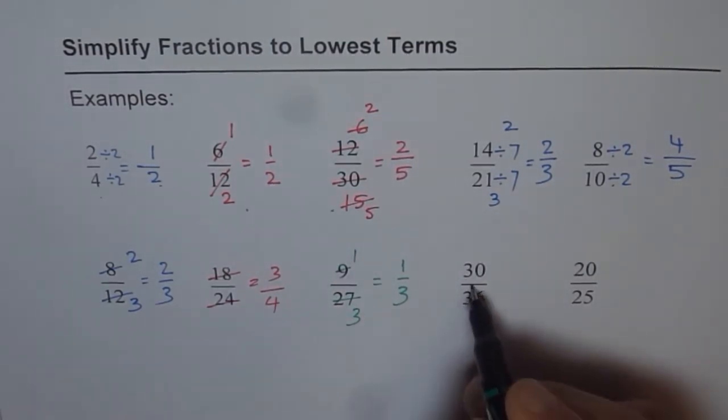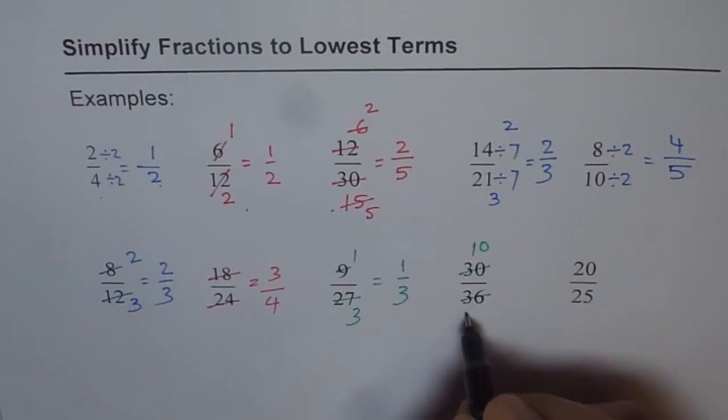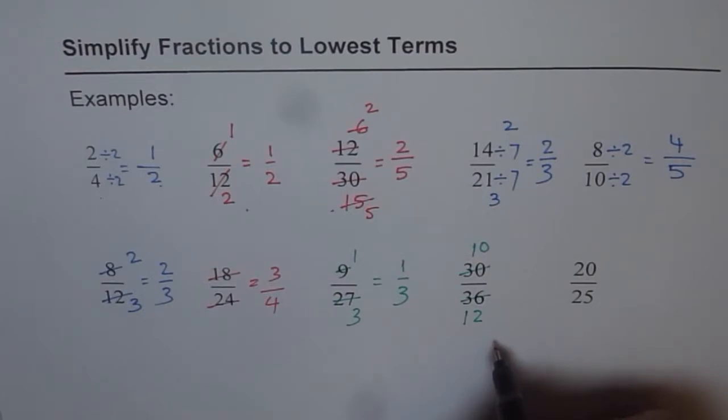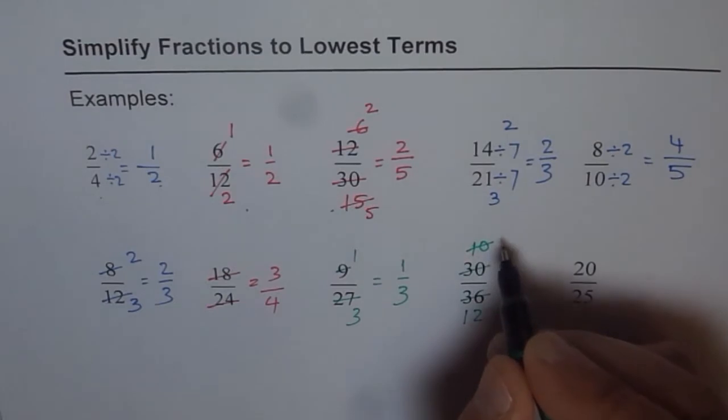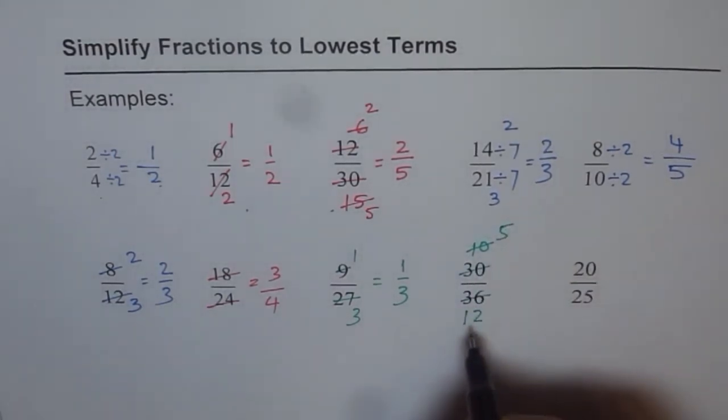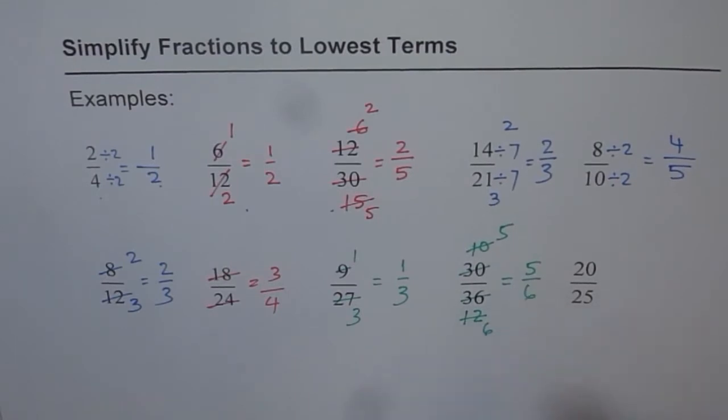How about this one? 30 over 36. Let me first divide by 3 and then see. Divide by 3, I get 10. Divide by 3, we get 12. So 10 and 12. Can you simplify them further? Both are even. Let's divide by 2. 5 and 6. So our answer is 5 over 6.